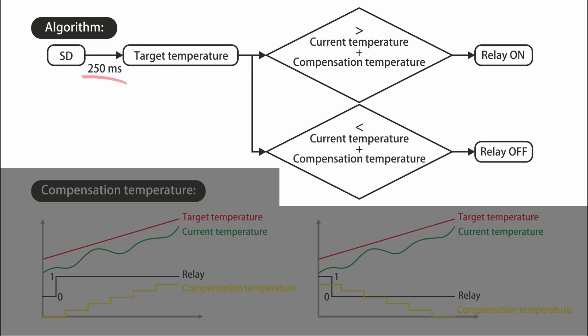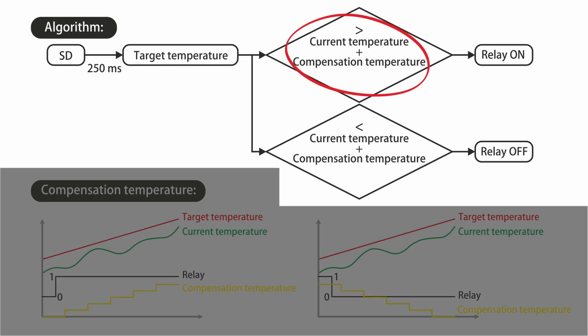So basically, the algorithm takes a target temperature every 250 milliseconds from the SD card. If the target temperature is higher than the current temperature plus a compensation temperature, the relay is activated. If it is smaller, the relay is deactivated. The compensation temperature is a dynamic value that tries to avoid the peaks due to the slow temperature transmission and its inertia.